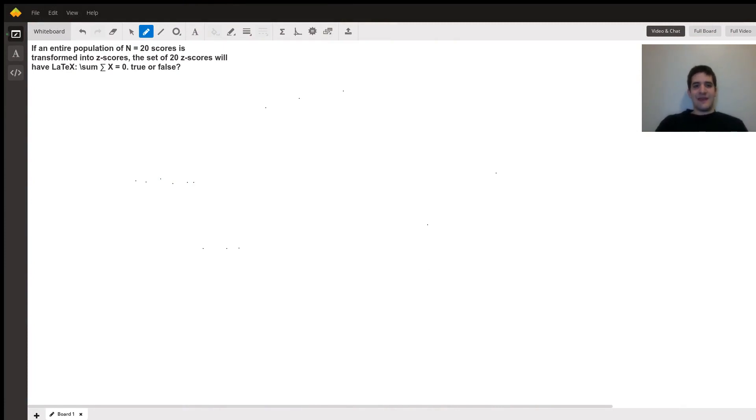Okay, so our question is, if we have an entire population of n equals 20 scores and we transform all of them into z-scores, then we're being asked whether that sum of those z-scores will be equal to zero.